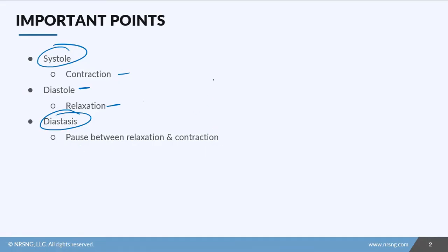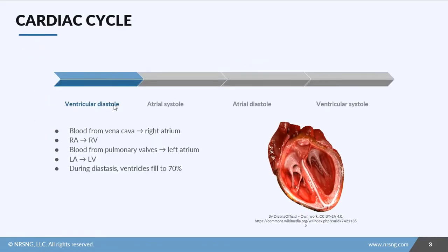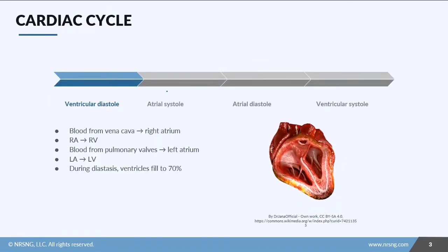If you want to talk about anything atrial — anything related to the atria — you have to say 'atrial' before it. So if you're talking about contraction of the atria, you say 'atrial systole,' or relaxation would be 'atrial diastole.' If not specified, it's assumed to be ventricular.